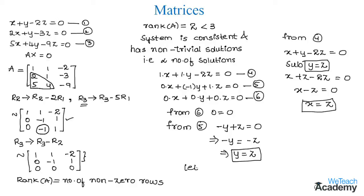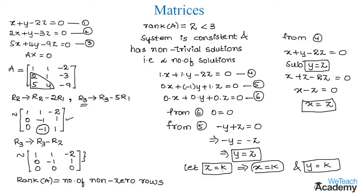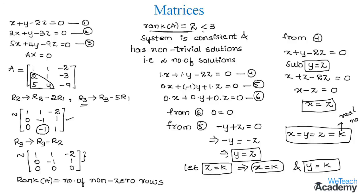Let us assume the value of z as k. Then x equals k and y equals k as well. Therefore the solutions are x equal to y equal to z equal to k, where k is any real number. Note that if the rank of matrix A is less than the number of unknowns, the homogeneous system of linear equations has non-trivial solutions.